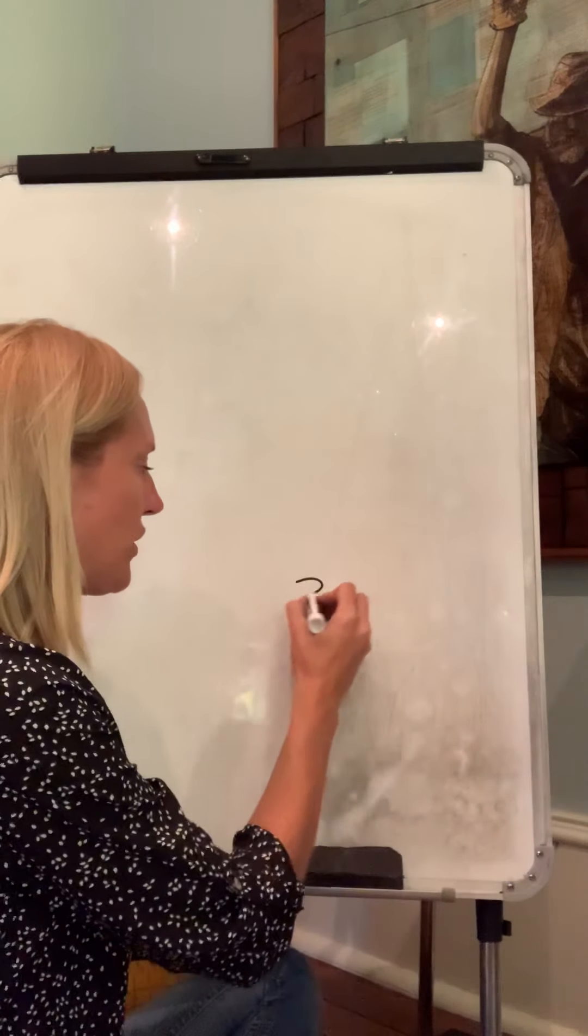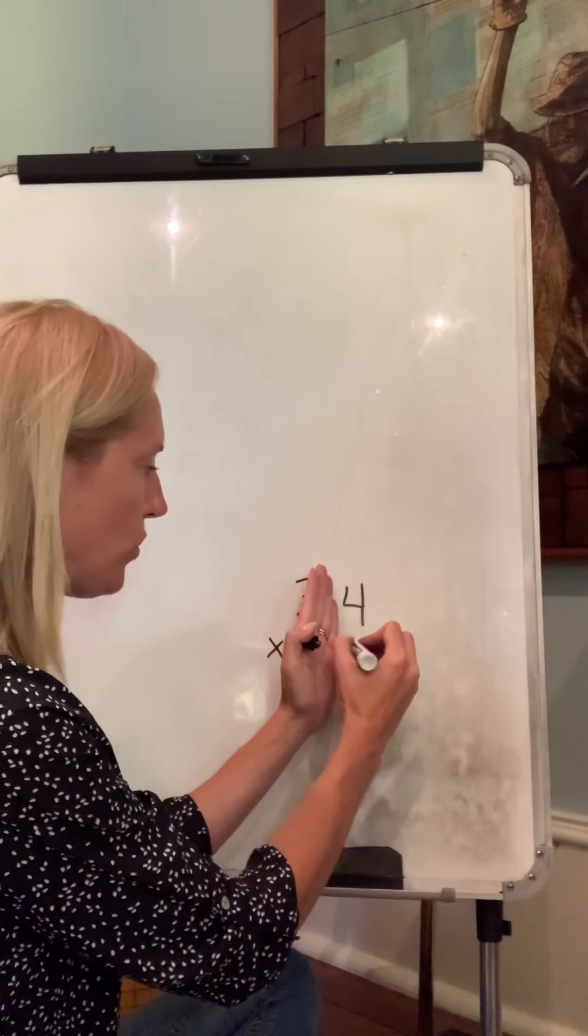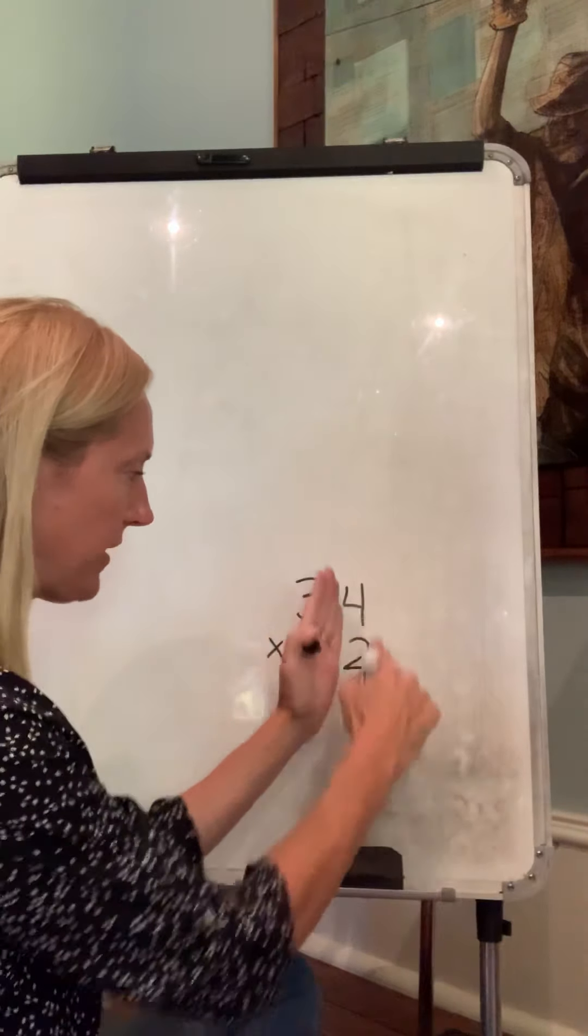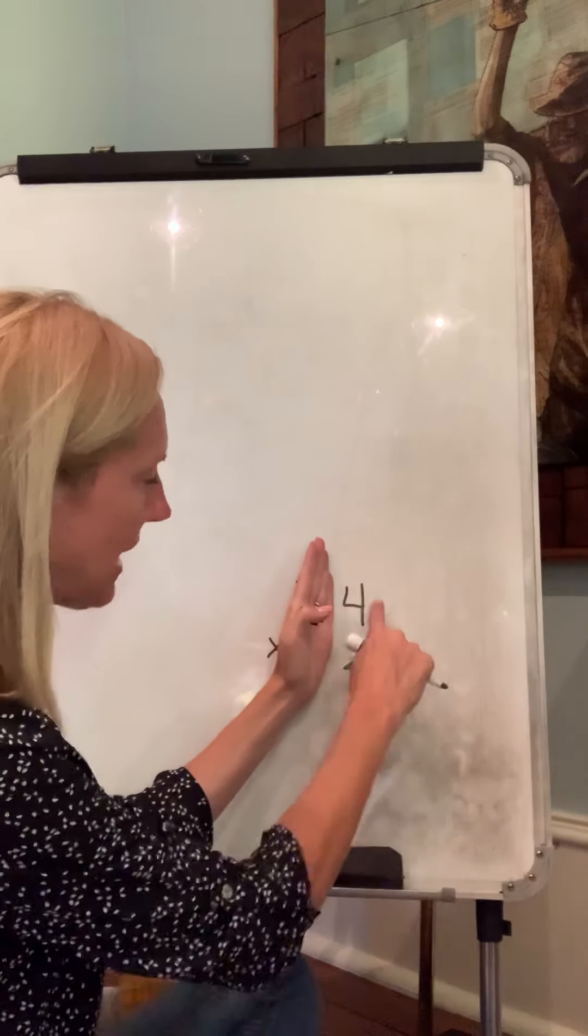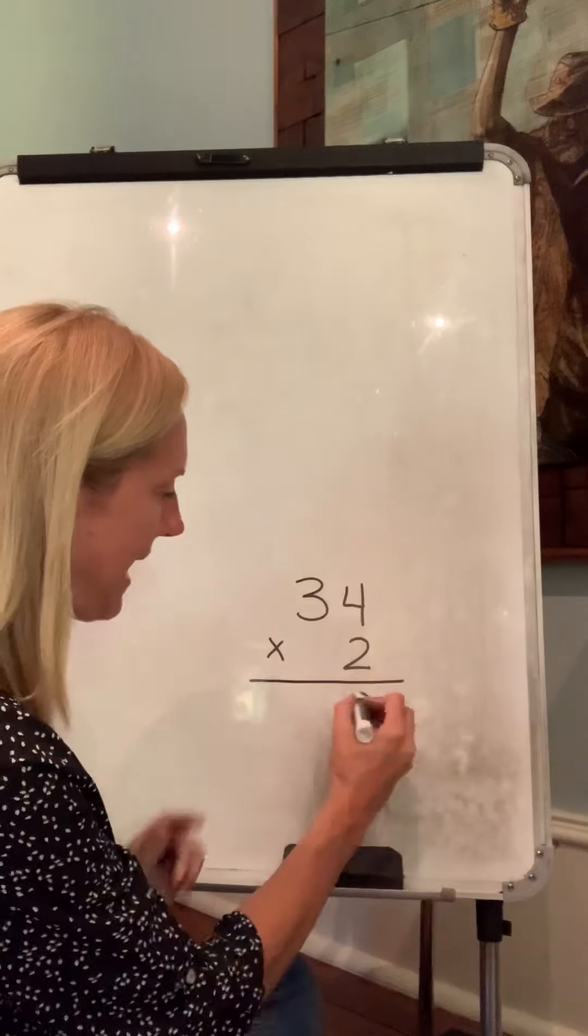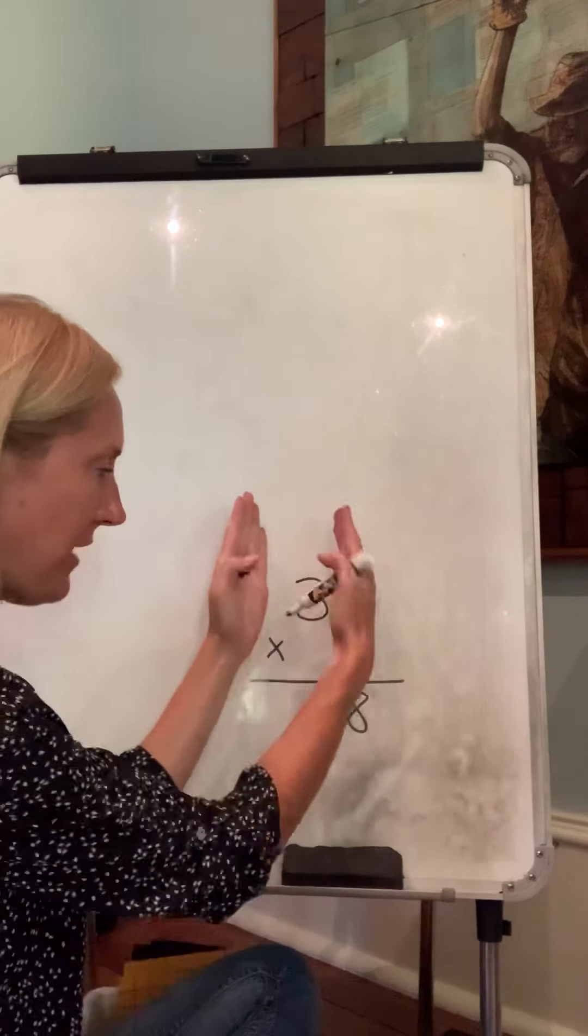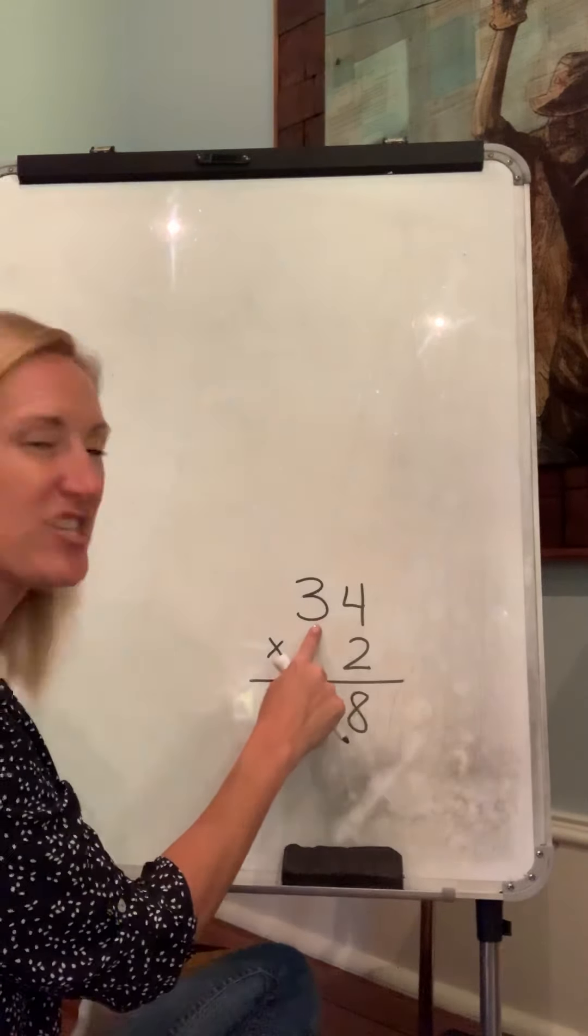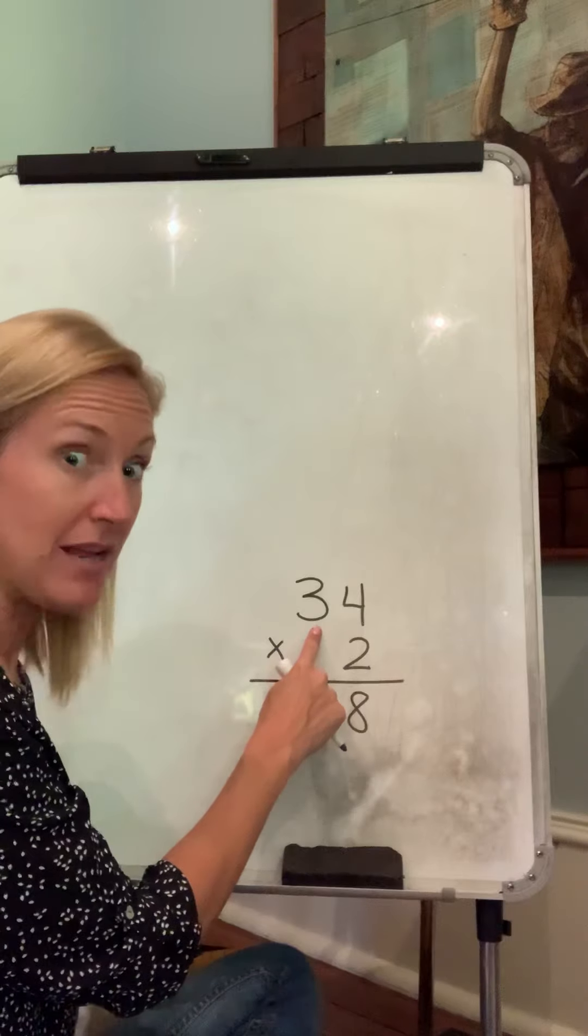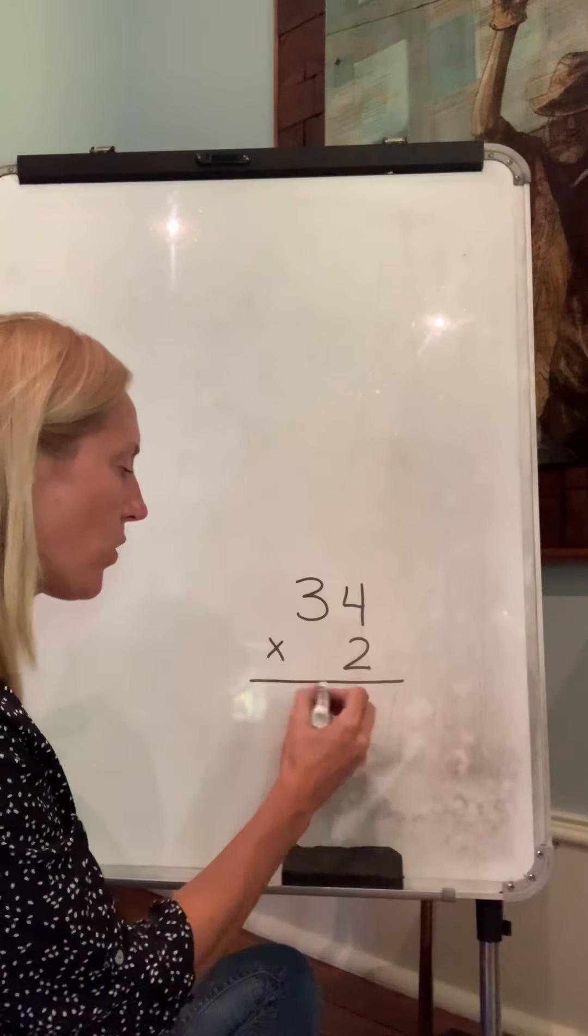Same thing with multiplication. Let's say we have thirty-four times two. The two goes under the ones and we start with the ones. Two times four equals eight. But now we're not going to do three times zero like in addition - we're going to do three times two, which is actually thirty times two. Three times two is six, or sixty. Sixty-eight.